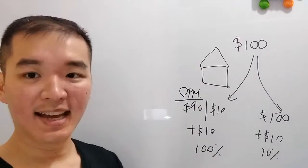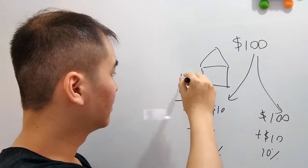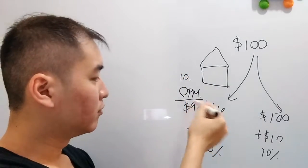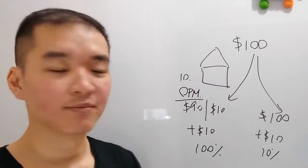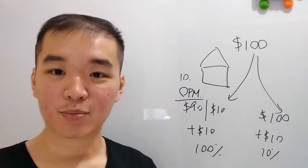That means I can buy 10 houses and borrow 90% using other people's money and make a hundred percent.